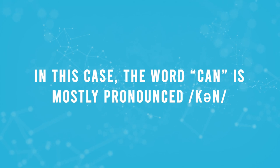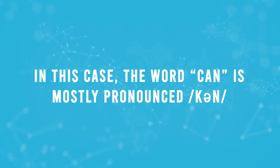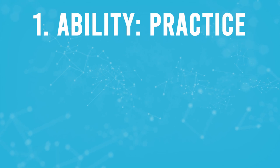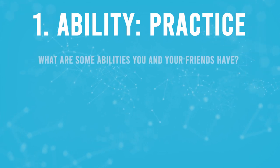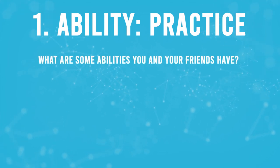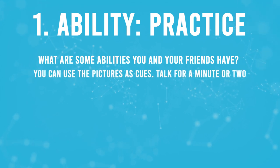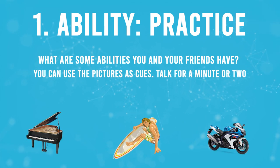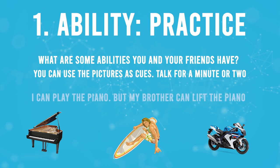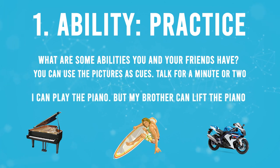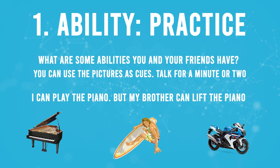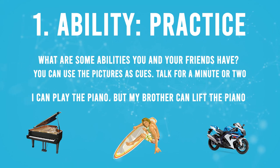In this case, the word can is mostly pronounced 'cun.' Practice: what are some abilities you and your friends have? You can use the pictures as cues. Talk for a minute or two. For example: I can play the piano, but my brother can lift the piano. Pause the video and talk for a couple of minutes.